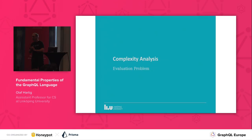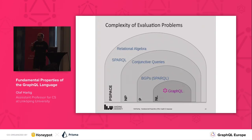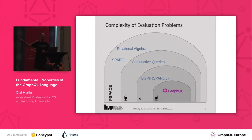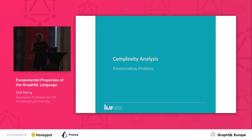The first type of thing we analyzed was what is called the evaluation problem in database theory. For those of you familiar with some of this terminology: we proved that the evaluation problem for GraphQL is NL-complete. NL is a very low complexity class. On the slide I also show some of the other well-known languages and in which complexity classes they fall with respect to the evaluation problem. But let's jump to something more practical — the enumeration problem.